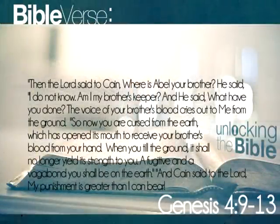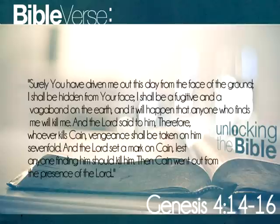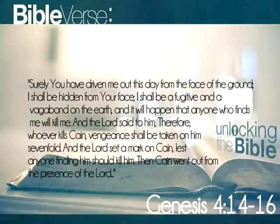Then the Lord said to Cain, 'Where is Abel, your brother?' He said, 'I do not know. Am I my brother's keeper?' And he said, 'What have you done? The voice of your brother's blood cries out to me from the ground. So now you are cursed from the earth, which has opened its mouth to receive your brother's blood from your hand. When you till the ground, it shall no longer yield its strength to you. A fugitive and a vagabond you shall be on the earth.' And Cain said to the Lord, 'My punishment is greater than I can bear. Surely you have driven me out this day from the face of the ground. I shall be hidden from your face. I shall be a fugitive and a vagabond on the earth, and it will happen that anyone who finds me will kill me.' And the Lord said to him, 'Therefore, whoever kills Cain, vengeance shall be taken on him sevenfold.' And the Lord set a mark on Cain, lest anyone finding him should kill him. Then Cain went out from the presence of the Lord.